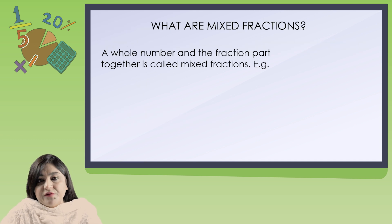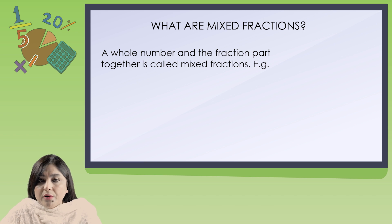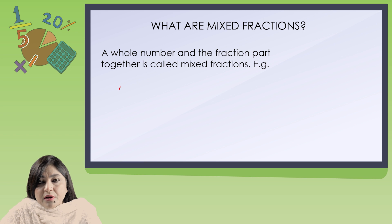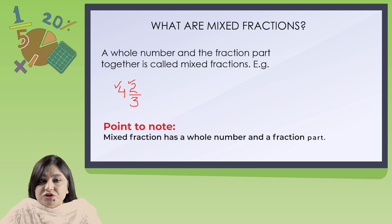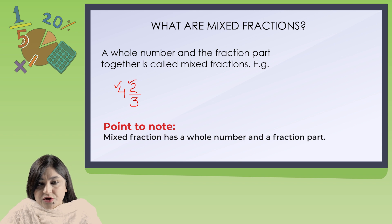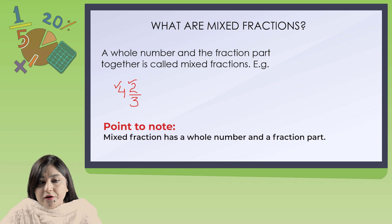Next, what are mixed fractions? Mixed fractions mean a whole number and a fractional part together — this is called a mixed number. For example, 4 and 2 by 3 is a mixed number. Why? Because it contains a whole number, 4, and a fraction part, 2 by 3. That is why it is called a mixed fraction.